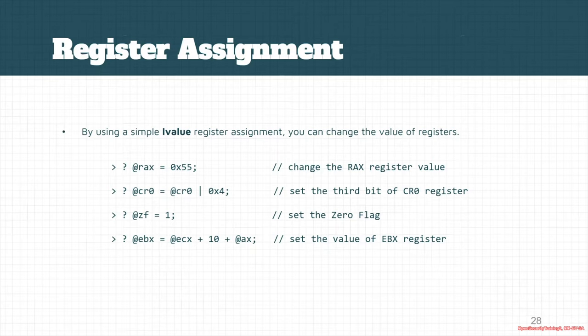assign it to @cr0 = @cr0 | 0x4 if we want to set the third bit of the CR0 register. Then we use this second command.